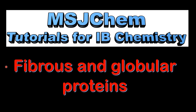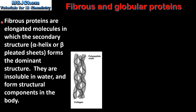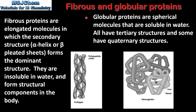This is MSJChem. In this video I'll be looking at fibrous and globular proteins. Let's start with fibrous proteins. Fibrous proteins are elongated molecules in which the secondary structure — that's the alpha helix or beta pleated sheets — forms the dominant structure. They are insoluble in water and form structural components in the body. Here we have collagen, which is an example of a fibrous protein.